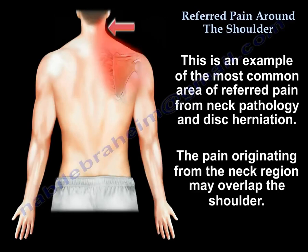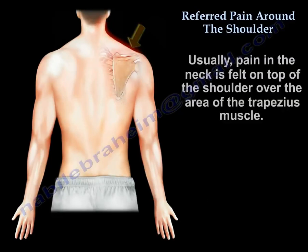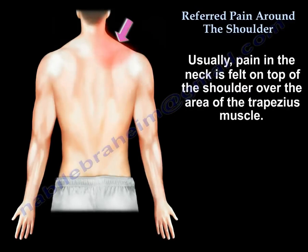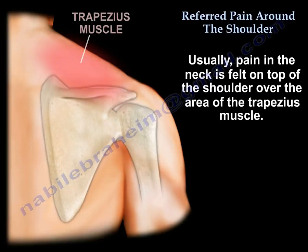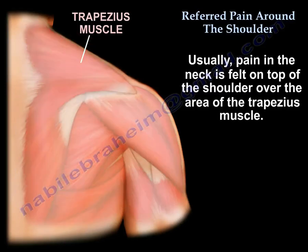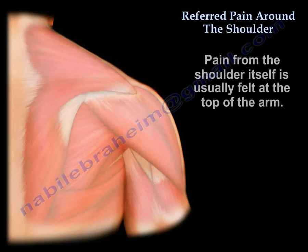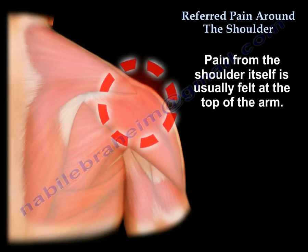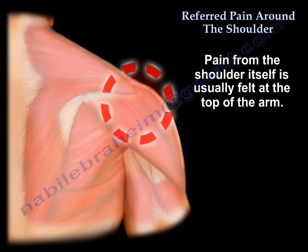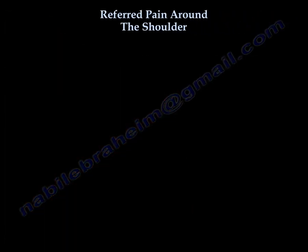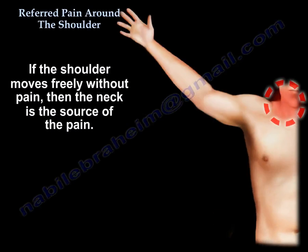As you can see here, the pain originating from the neck area may overlap the shoulder. Usually pain in the neck itself is felt on top of the shoulder over the area of the trapezius muscle. Pain from the shoulder itself is usually felt at the top of the arm. If the shoulder moves freely without pain, then the neck is the source of pain.